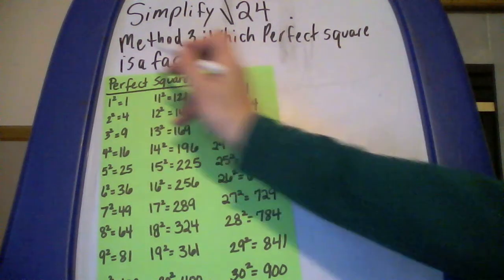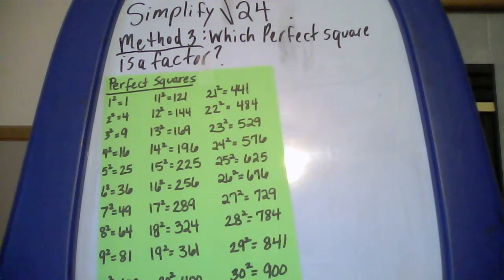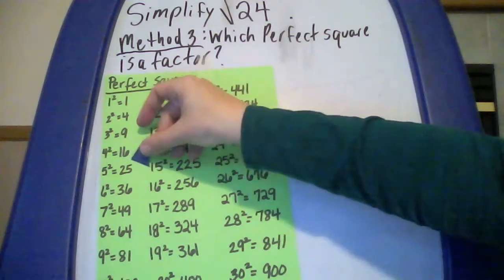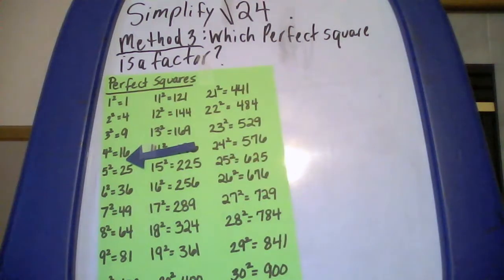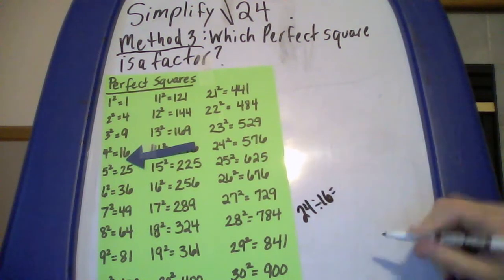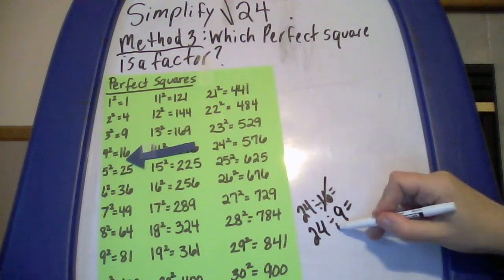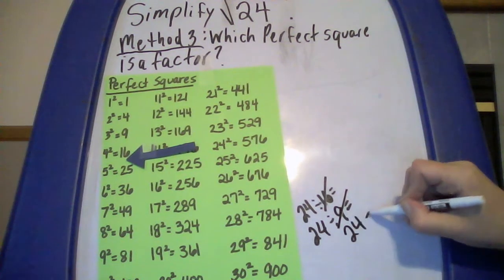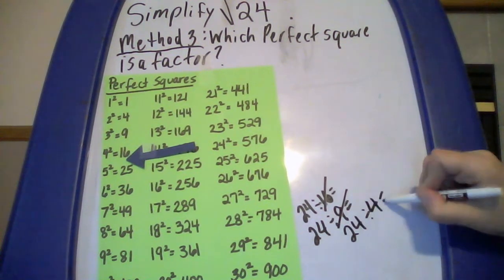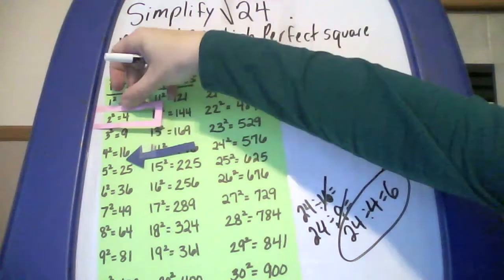Here's method 3. This time, we're going to focus on perfect squares and ask which perfect square is a factor of 24. Looking at our list of perfect squares: 24 falls between 16 and 25. Can we divide 24 by 16 and get a whole number? No. Can we do 24 divided by 9? That won't be a whole number, so 9 is not a factor. Can we do 24 divided by 4? Yes, we get 6. So 4 is the perfect square that's a factor of 24. I'm going to box that in.